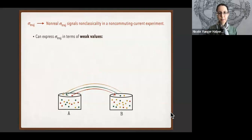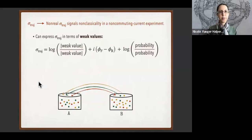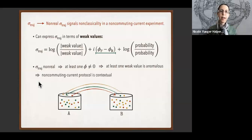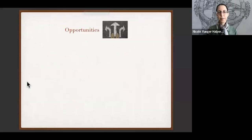Classical theory is non-contextual, so contextuality is true non-classicality. We can express stochastic entropy production as the log of a ratio of magnitudes of two weak values plus i times the difference of their complex phases, plus a log of some probabilities. If this becomes non-real, at least one weak value phase is non-real, that weak value is anomalous, therefore there is contextuality — in a protocol where charges that fail to commute flow. This stochastic entropy production emerges as one of very few thermodynamic signatures of contextuality.